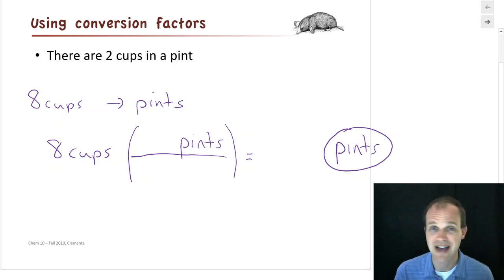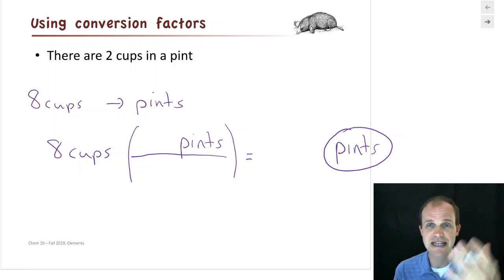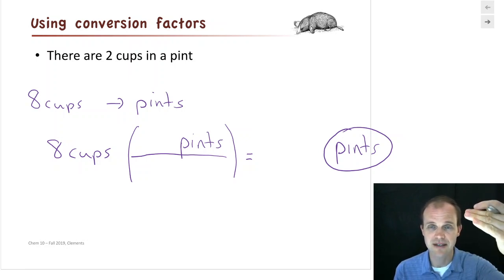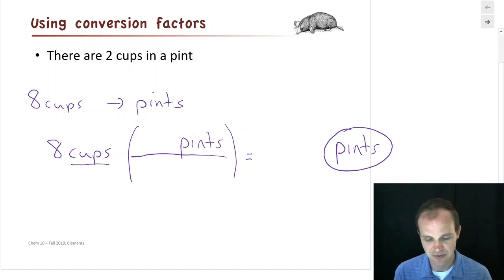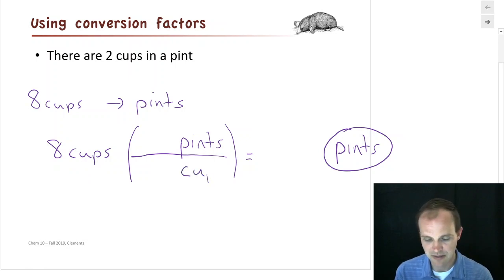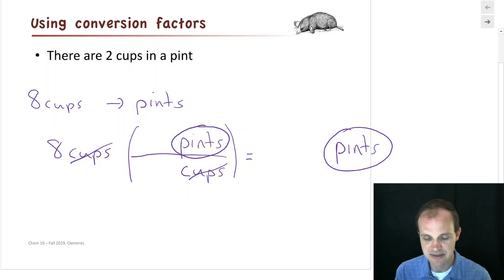What about cups? I don't want cups anymore. To get rid of cups, in math, if you're trying to cancel something — one thing on top, one thing on bottom. Cups is in the numerator here, so if I want to cancel it, I need cups on the bottom of my conversion factor. I can cancel those cups, and I end up with pints, which is what I want.